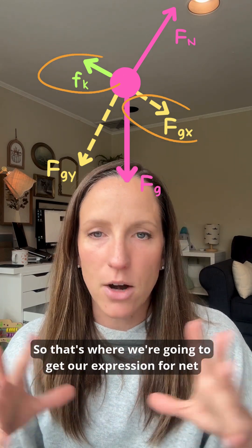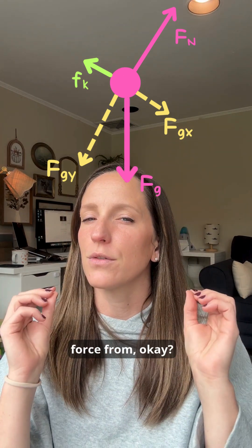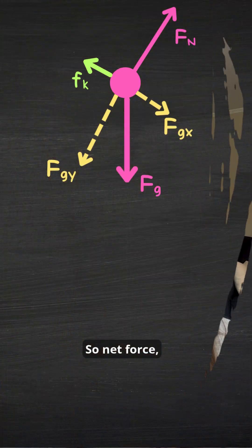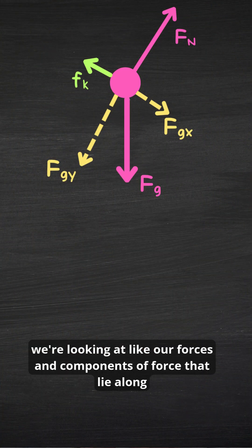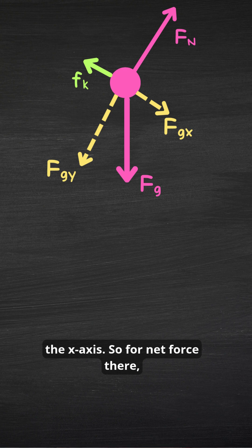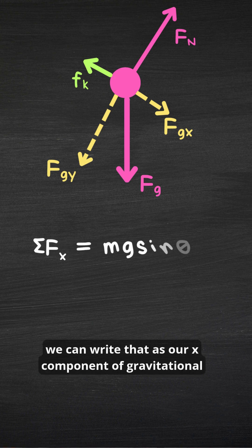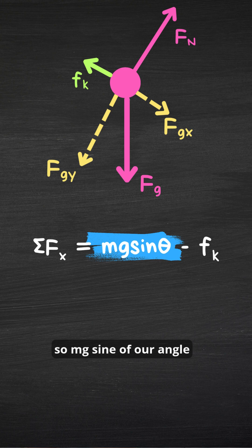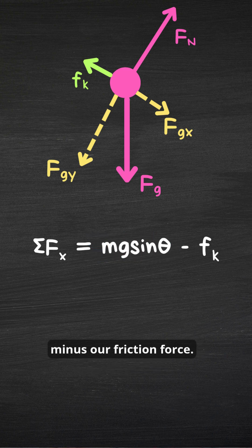So that's where we're going to get our expression for net force from. So net force, we're looking at forces and components of force that lie along the x-axis. So for net force there, we can write that as our x component of gravitational force, mg sine of our angle that the surface makes with the horizontal, minus our friction force.